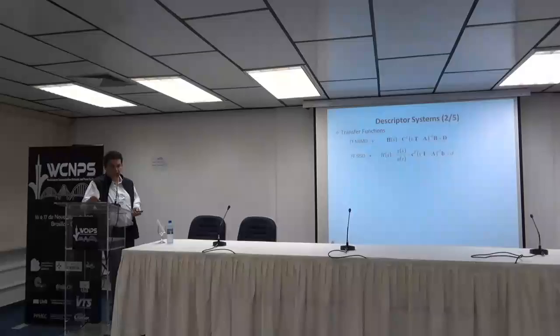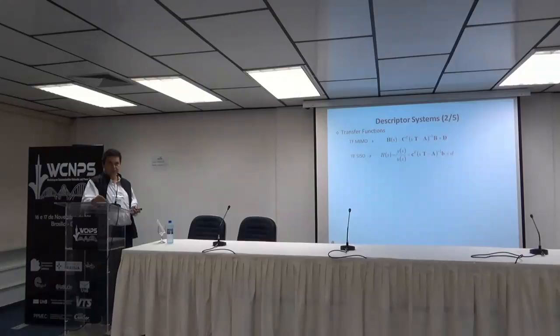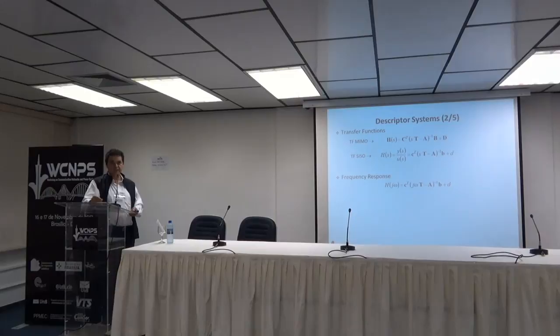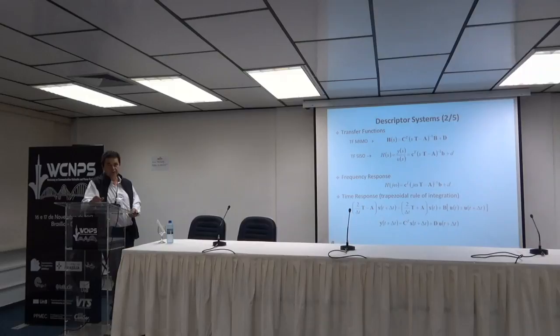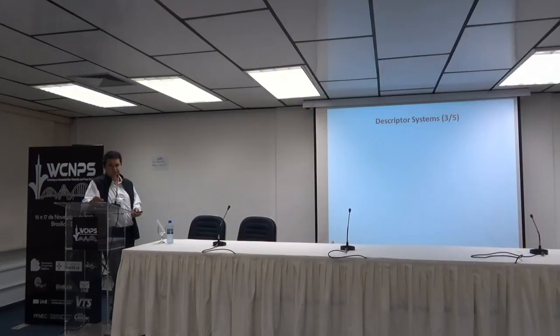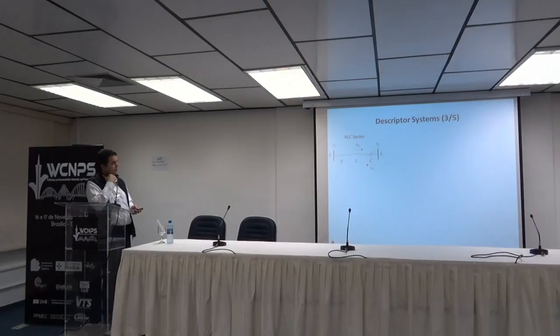You can get transfer functions for multivariable and scalar systems. To plot frequency response, you replace S and scan along sampled values of omega. To plot time response, you apply a numerical integration method — here the trapezoidal rule of integration, which is the method used in EMTP and also in CEPEL's transient stability software, ANATEN. Here is the basic RLC series network and the equations used for modeling and assembling the descriptor system matrix.